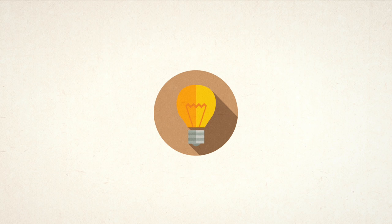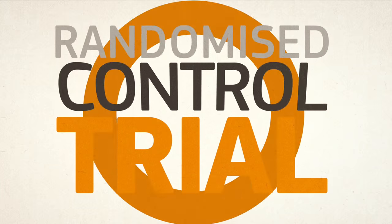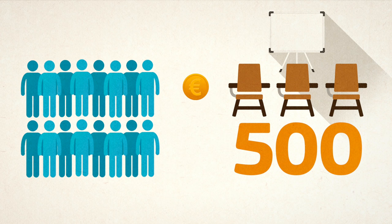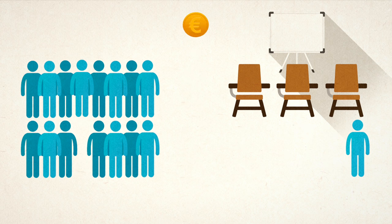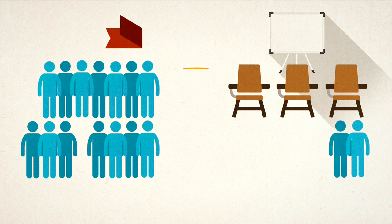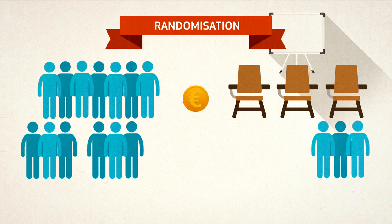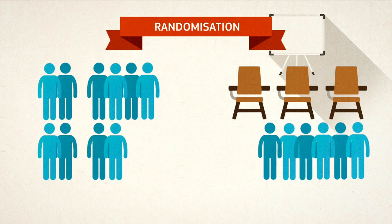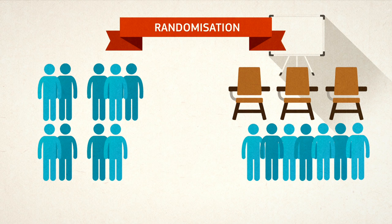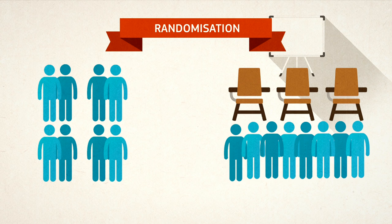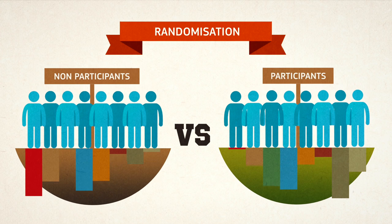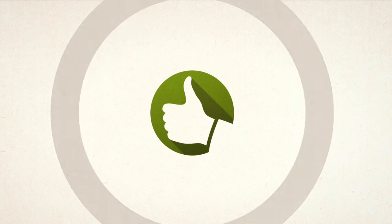One solution for the selection bias problem is to conduct a randomised control trial. How does it work? Let's say there are 1,000 people who want to participate, but there are only 500 places. We flip a coin and choose who among the 1,000 volunteers will participate and who will not. This is called randomisation. Randomisation ensures that the two groups are statistically similar in terms of age or education, and the only difference is participation in the training programme. After the training, we compare the employment status of the two groups and estimate the effect of the programme. This is the gold standard.